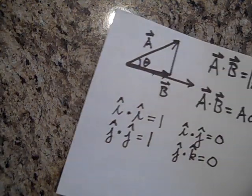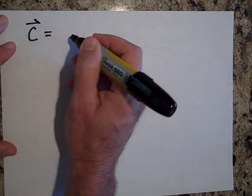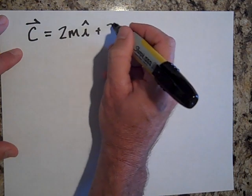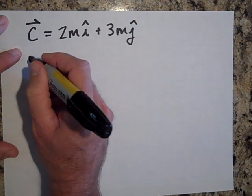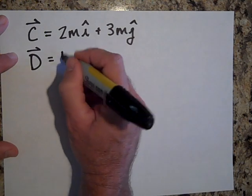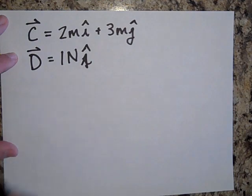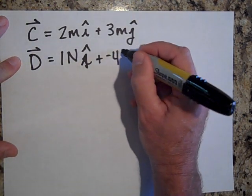So let's just do one more just for good measure. I have a vector, let's say I have a vector C, it's 2 meters in the i direction plus 3 meters in the j direction. And I have another vector D, and that's actually a force, and that's 1 newton in the i direction plus negative 4 newtons in the j direction.